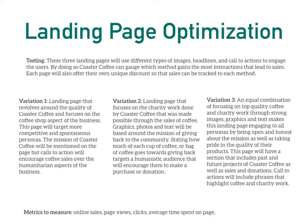Each page will offer their own unique discount so that sales can be tracked to each method. Variation one revolves around the quality of Coaster Coffee and focuses on the coffee shop aspect of the business, targeting more competitive and spontaneous personas. Variation two focuses on the charity work done by Coaster Coffee to target more humanistic personas. Variation three is more broad, combining coffee and non-profit in equal amounts, covering every aspect of what Coaster Coffee does.